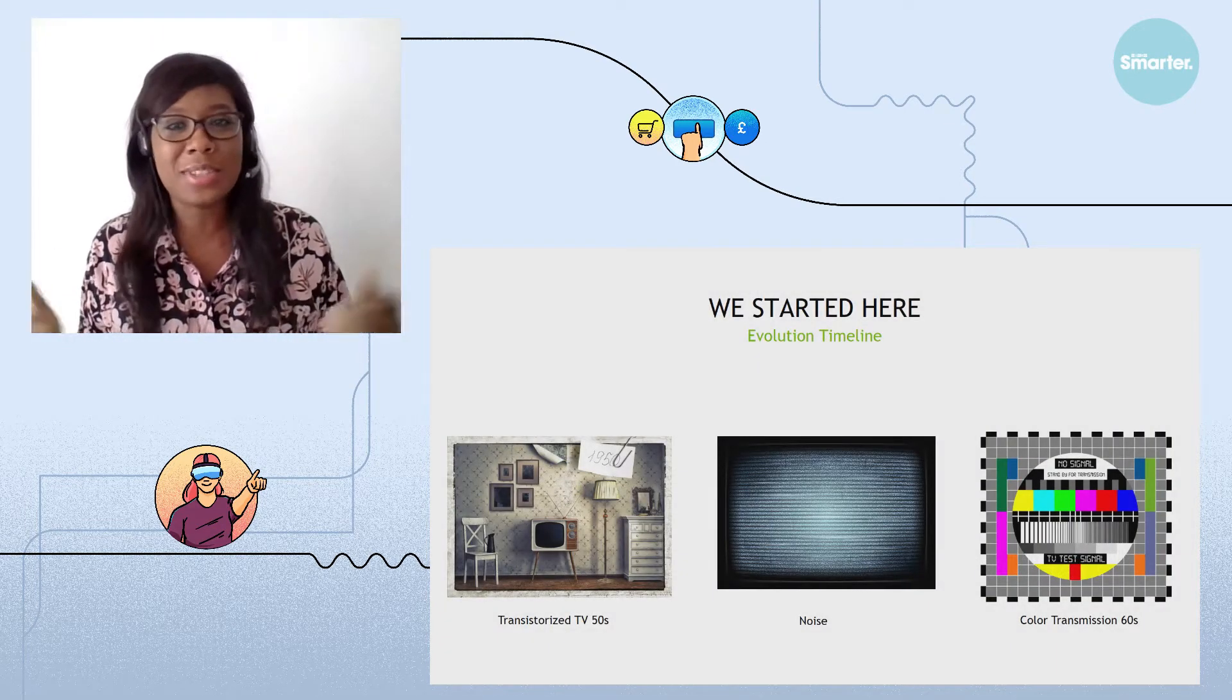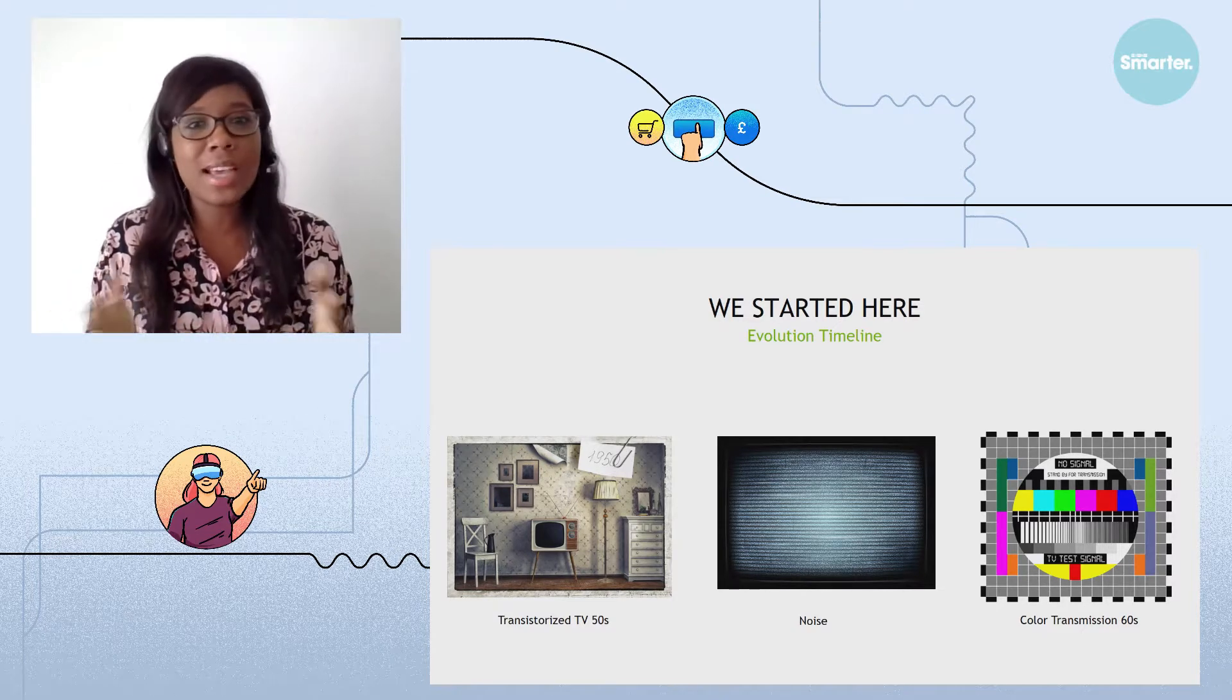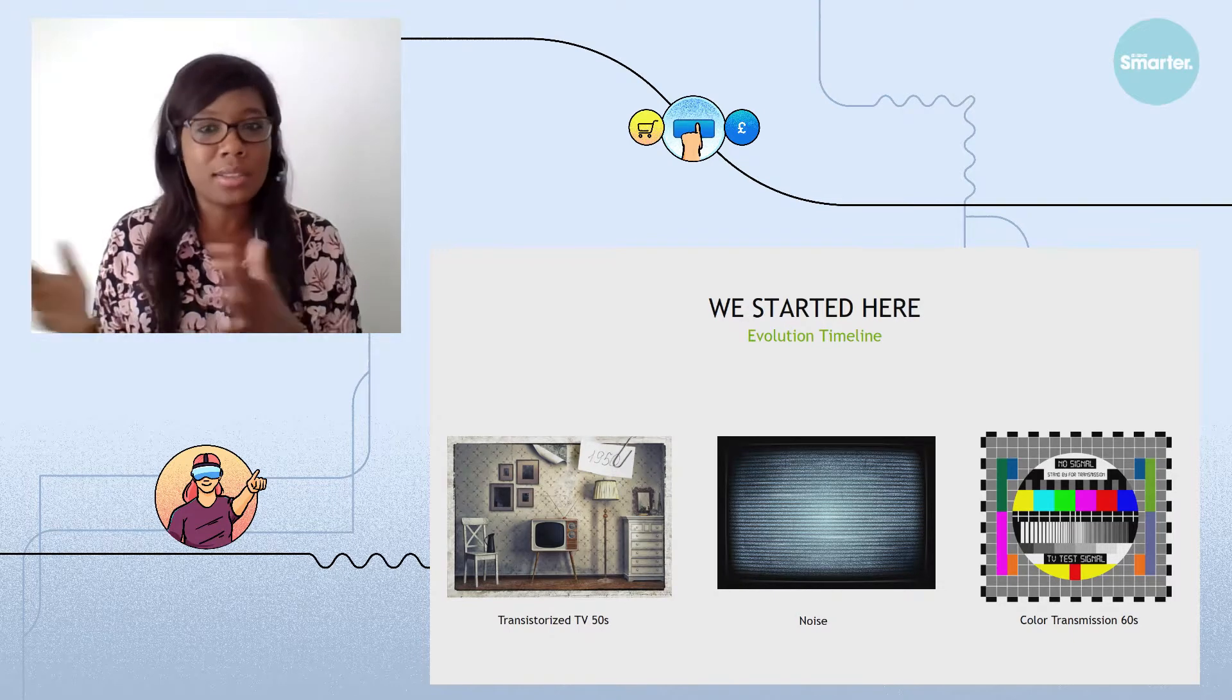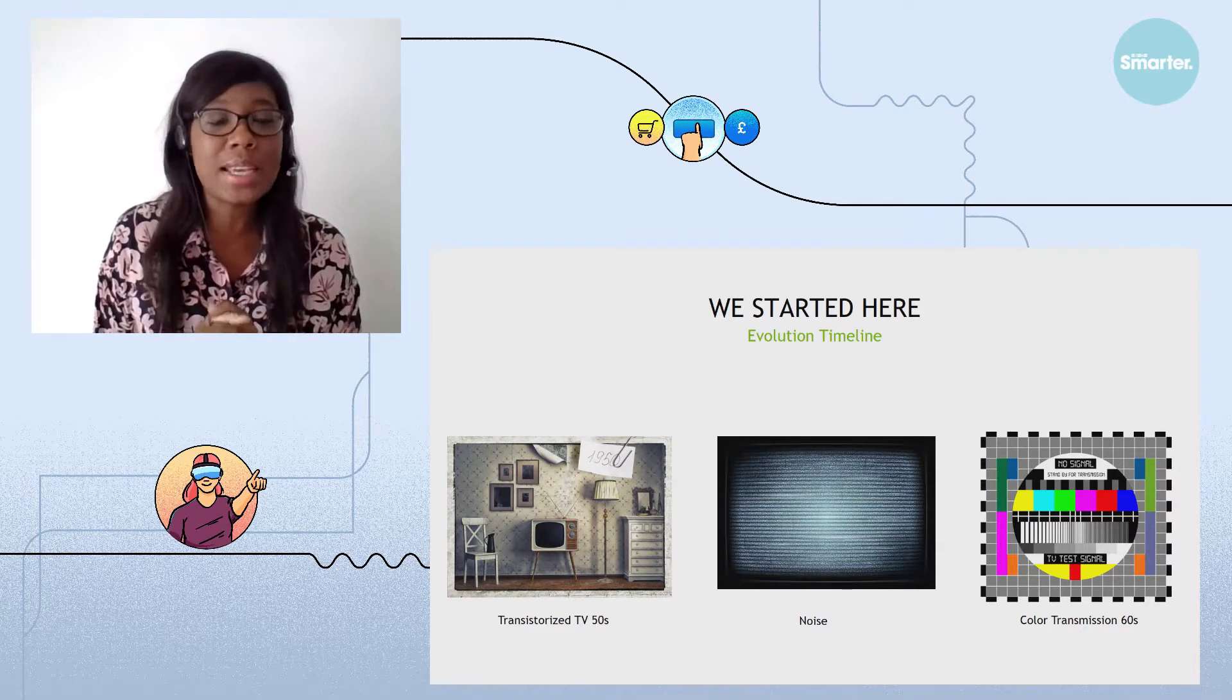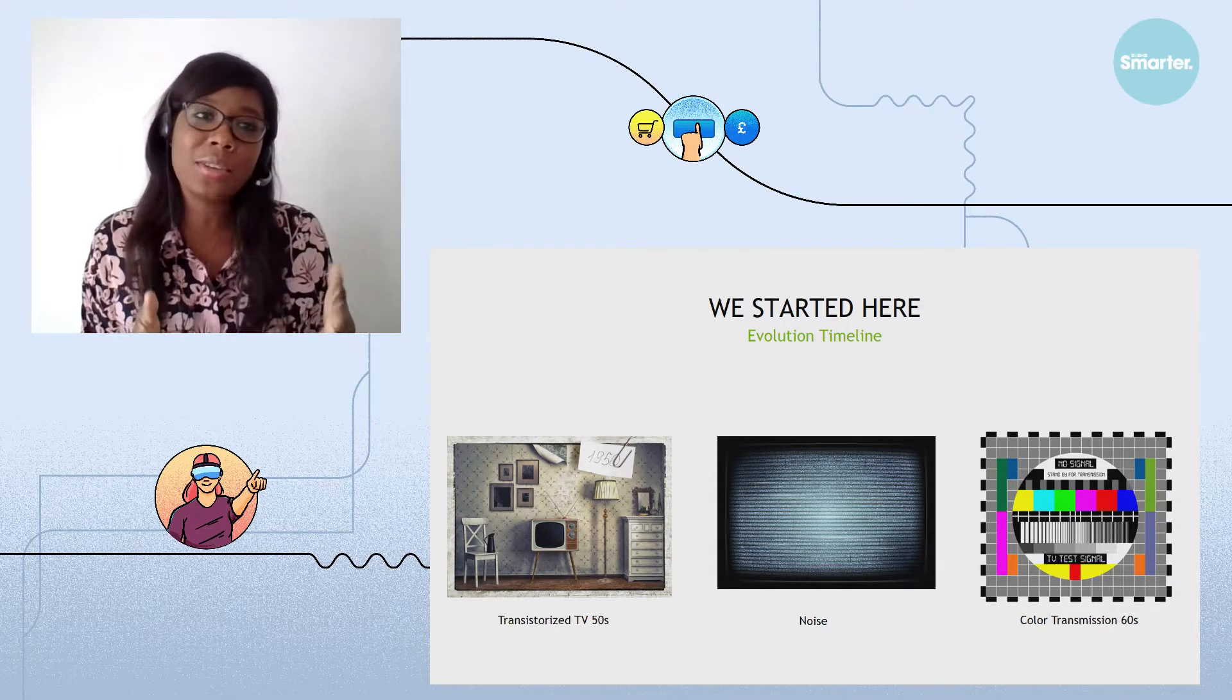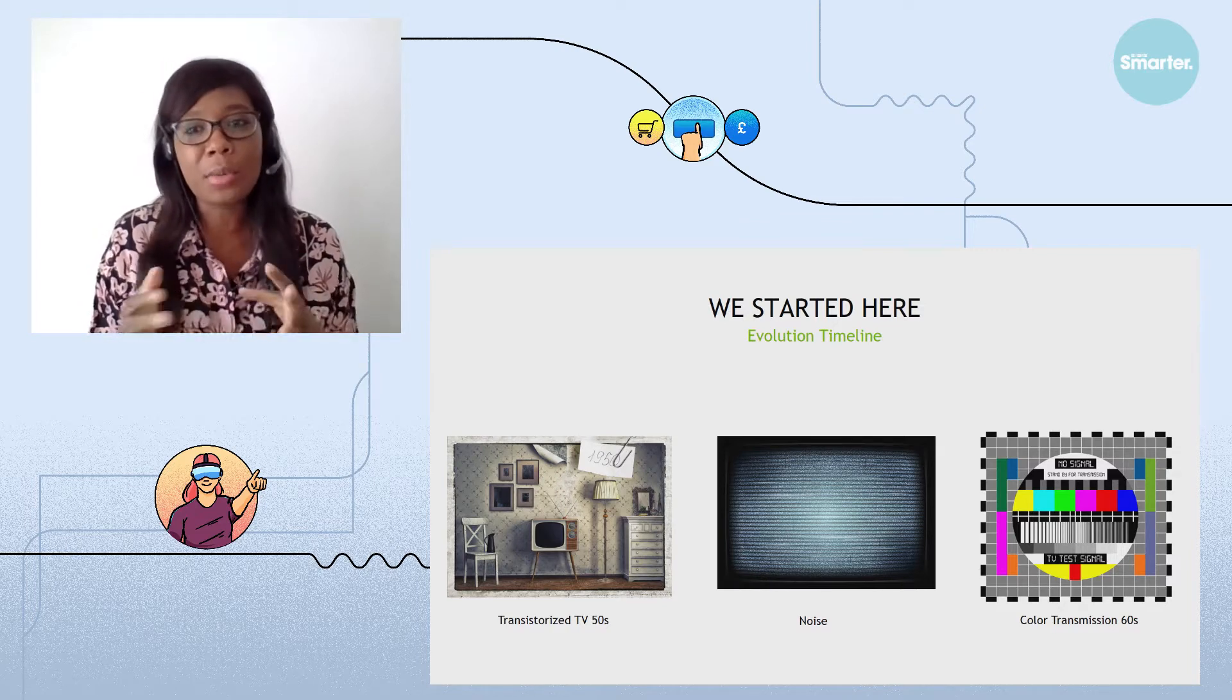So the TV back in the 50s was black and white, transistorized TV. At the time in the UK's early 50s, you had only one channel and a second one appeared in the mid 50s. And at that time, only 350,000 households in the UK had access to TV. It was highly regulated hours. You could only watch TV for a couple of hours per day.